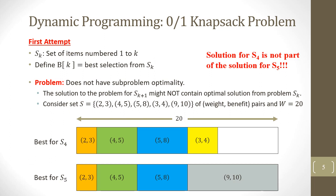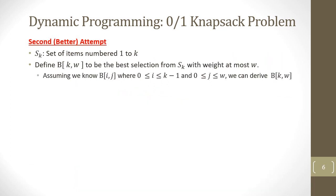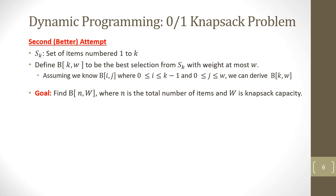Considering only the item number in the sub-problem is not sufficient. Let's add another parameter W, which will represent the maximum weight. For each subset of items, the sub-problem will be to compute B(k, W) — that is, to find the best selection from S_k in a knapsack of size W. Assuming we know B(i, j) where i is a subset of items from 1 to k-1, we can derive the value of B(k, W), which is a sub-problem containing k items. The goal is to find B(N, W) where N is the total number of items and W is the knapsack capacity.